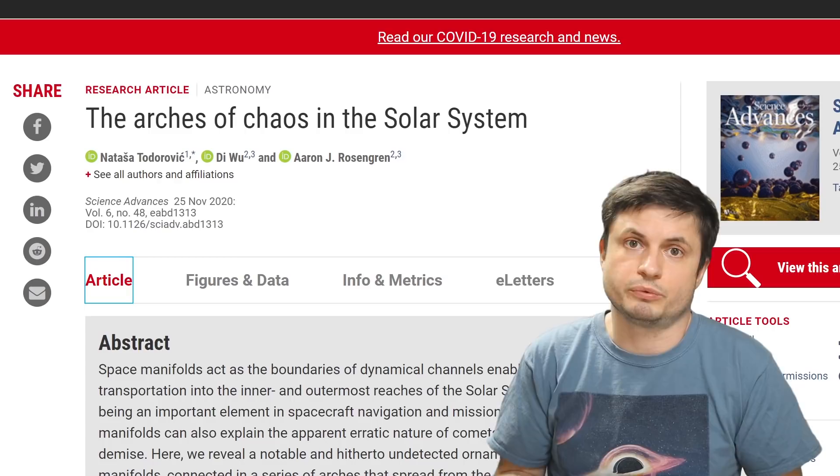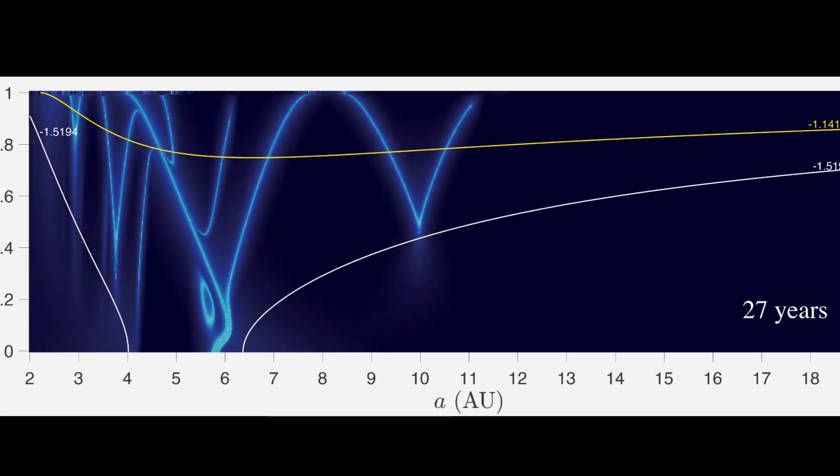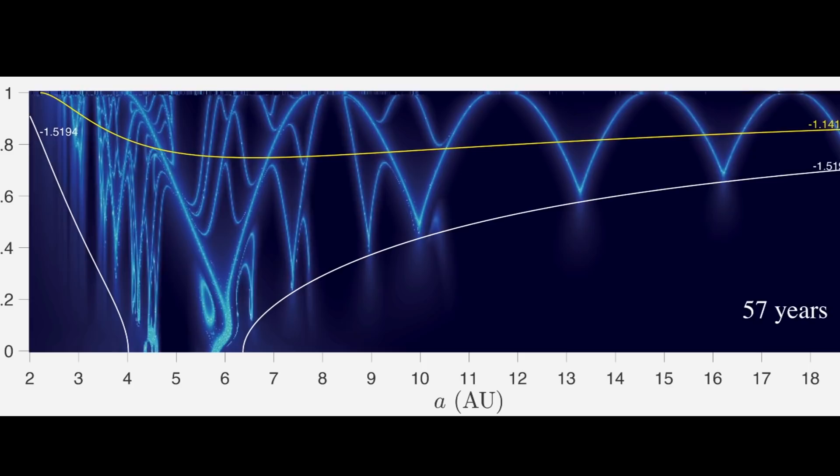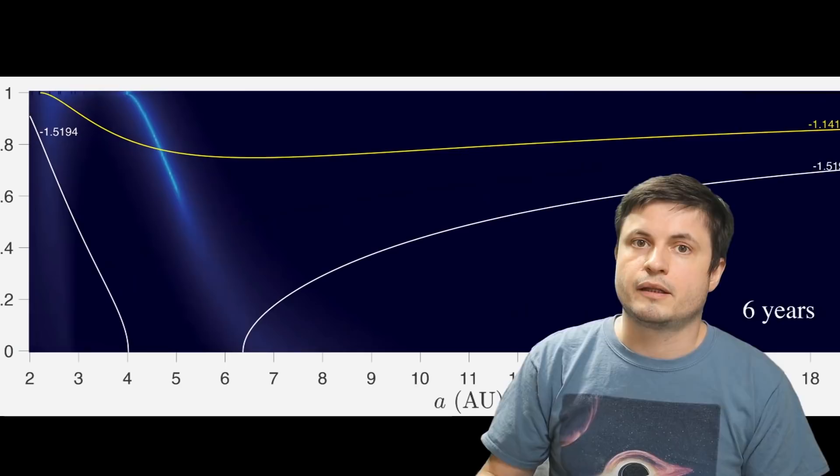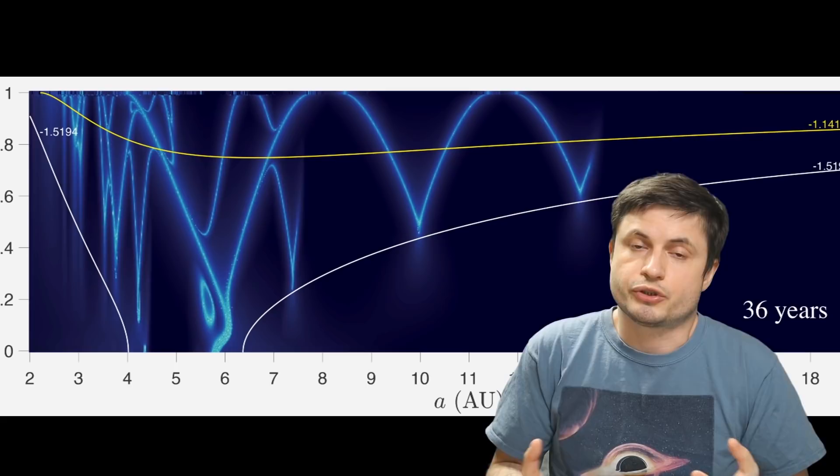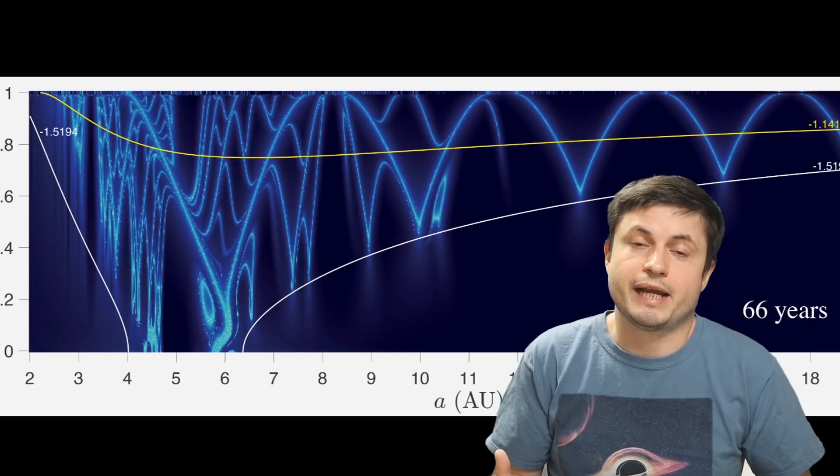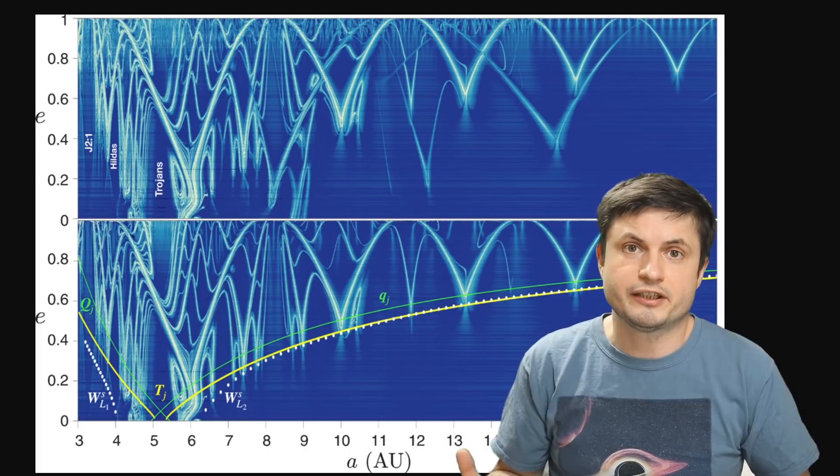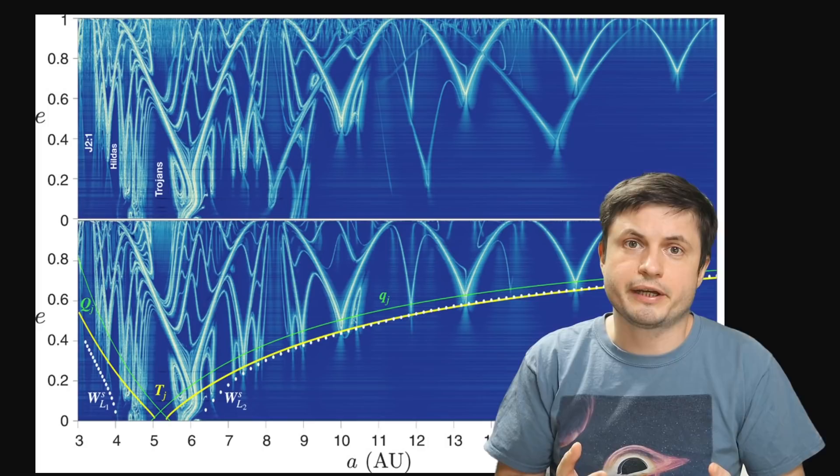And what this particular study that you can find in the description below decided to investigate and what the study discovered is the creation of various unusual formations, in this case space manifolds, by various planets as they interact with one another and as they interact with Jupiter and the sun. And these manifolds, through the mutual interaction with the planets, can create these unusual structures, unusual tunnels, or in some sense highways, that actually encourage and influence what in some ways we can call chaotic or chaos transport.